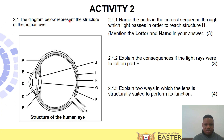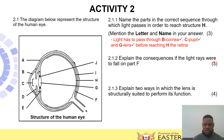Activity 2: the diagram also represents the structure of the human eye. Question 2.1.1 asks to name the parts in the correct sequence through which light passes in order to reach the retina, labeled H. The light enters through part B — the cornea — then passes through structure C — the pupil — then through G — the lens — and all the way until it reaches H, the retina. So the labeled path is B, C, G until it reaches H.